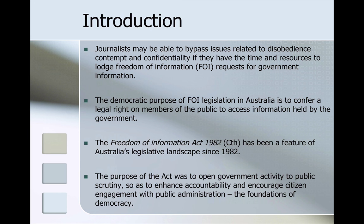Journalists may be able to bypass some of the issues related to disobedience contempt as well as confidentiality if they have the time and resources to lodge freedom of information requests for government information. The democratic purpose of the FOI regime in Australia is to confer a legal right on members of the public to access information held by the government. This has been a feature of Australia's legislative landscape since 1982, at least at a federal level.